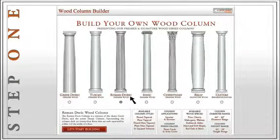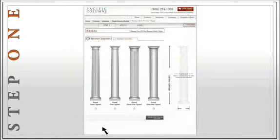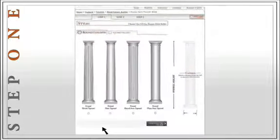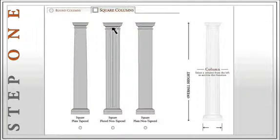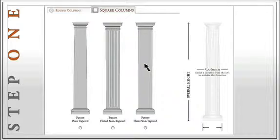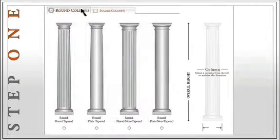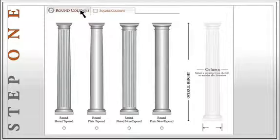Now that we have selected a column, we'll click on the let's start building button right below. Then you'll be prompted to select a type of shaft for your column, either in a round or square style. If you select a square column, you have three shaft options: plain tapered, fluted non-tapered, and plain non-tapered. If you select a round column, you have the same shafts as the square columns with one extra option, the fluted tapered shaft, and that's the one we'll choose.